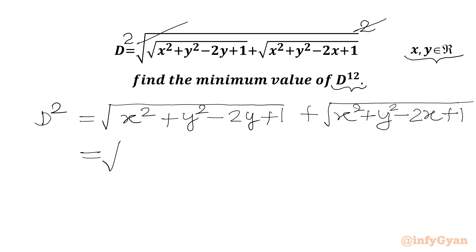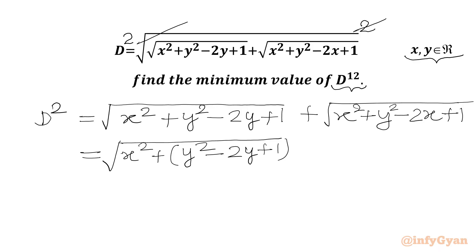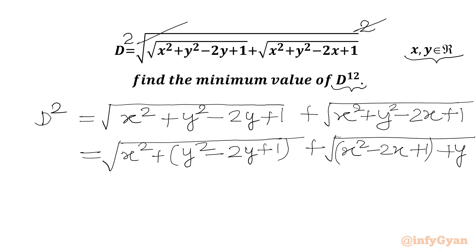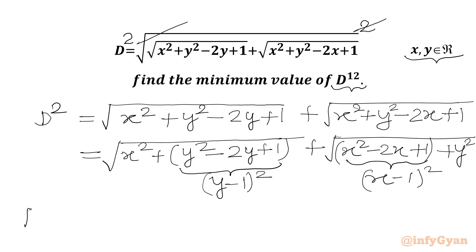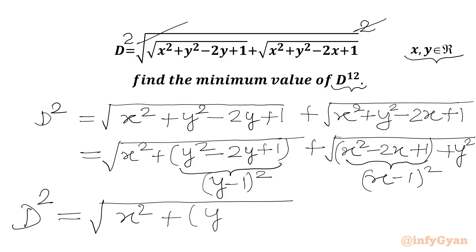Now we will rewrite our RHS. We write x squared separately, then put a bracket with y squared minus 2y plus 1, plus square root of a bracket with x squared minus 2x plus 1, and then the remaining term y squared. We know that y squared minus 2y plus 1 is (y minus 1) whole square, and x squared minus 2x plus 1 is (x minus 1) whole square. So d squared equals square root of x squared plus (y minus 1) squared plus square root of (x minus 1) squared plus y squared.